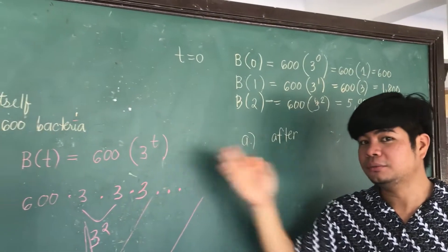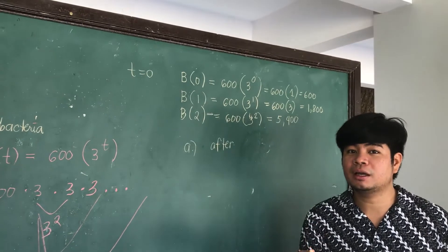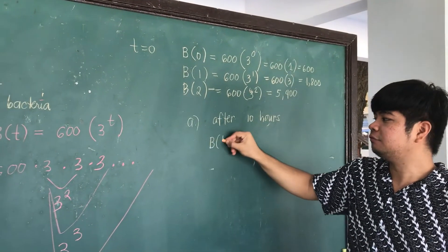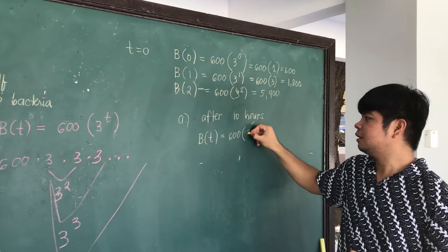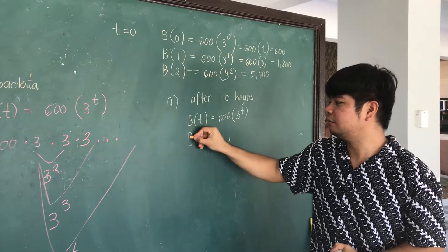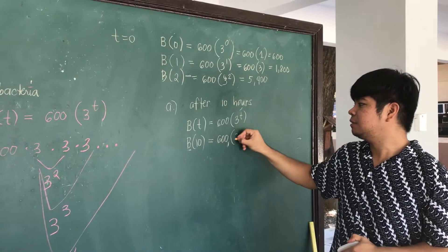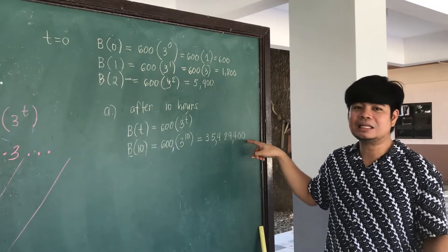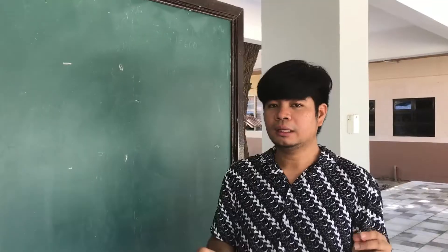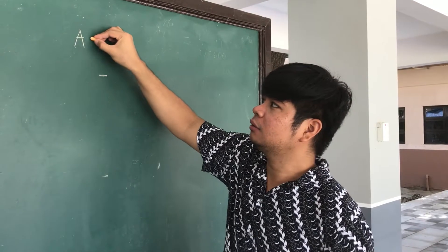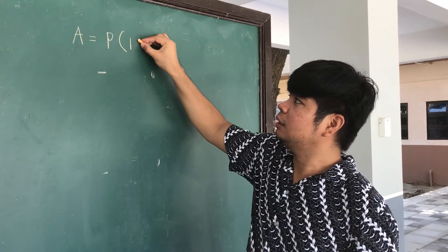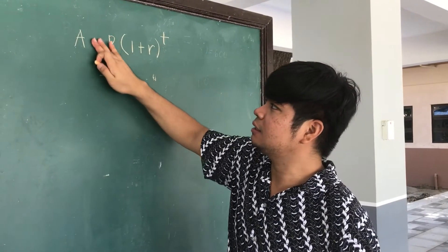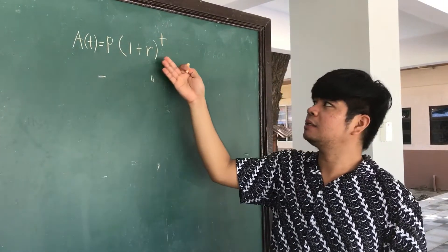Using this model function, what is the number of bacteria after 10 hours? B of t equals 600 times three raised to t. Let t equal 10: B of 10 equals 600 times three raised to 10, which equals 35,429,400 bacteria present after 10 hours.